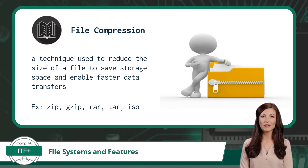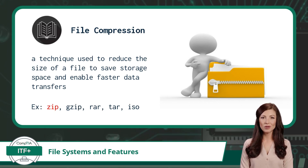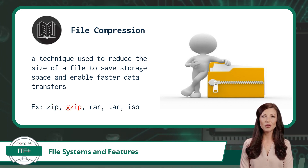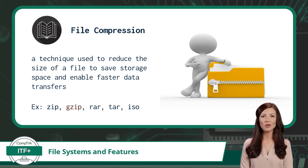Different types of data may compress better with different compression formats. ZIP is a widely used format supported by Linux, macOS, and Windows, effective for compressing documents, images, and multimedia files. Gzip is popular on Linux and macOS, designed for efficient and fast compression of text files, log files, and web content. RAR is associated with WinRAR, primarily used on Windows, and is known for higher compression ratios — suitable for large files and archives.